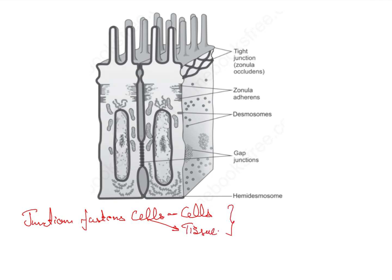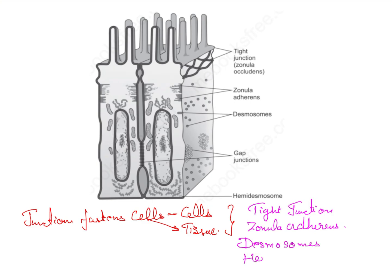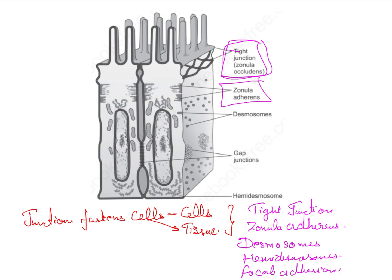The examples of fastening junctions are: tight junctions, also known as zonula occludens; adherens junctions, or zonula adherens; desmosomes; hemidesmosomes; and sometimes focal adhesion. These can all be seen in this particular figure.